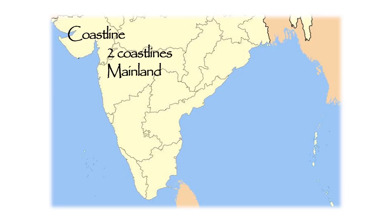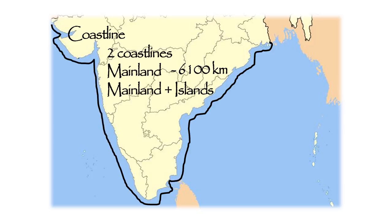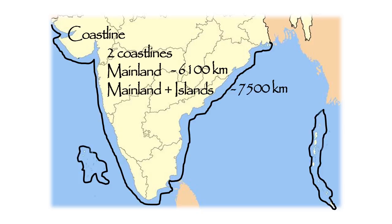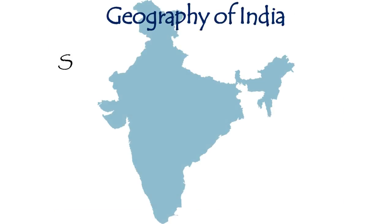India has two coastline measures. One is the mainland coastline length and the other is the coastline length including the mainland and the surrounding islands. The length of the mainland coastline of India is 6,100 kilometers, whereas the length of the coastline including both the mainland and surrounding islands is 7,500 kilometers.